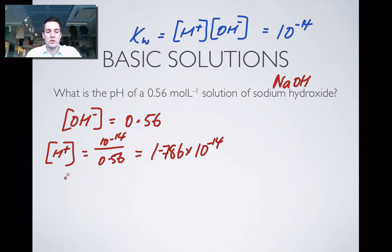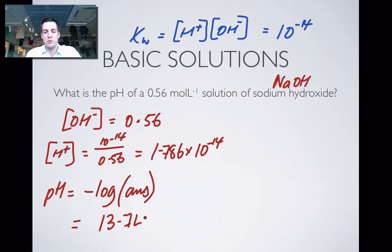I now know the concentration of H+ and I can find the pH. pH equals minus log. I'm not going to write all that out again, so I'll just put answer. So minus log to the base 10 of the answer is what we're looking for, and I'll find that the pH is 13.748.